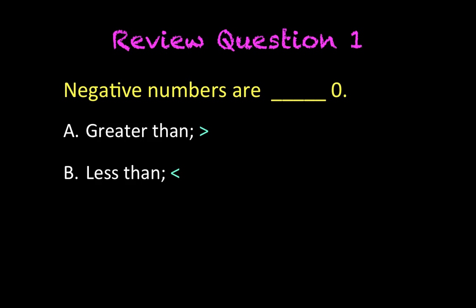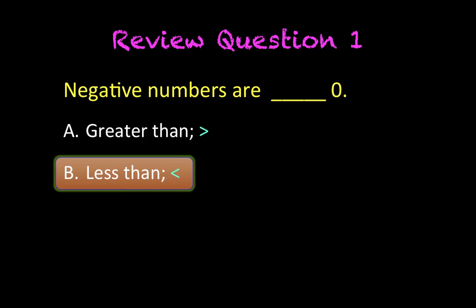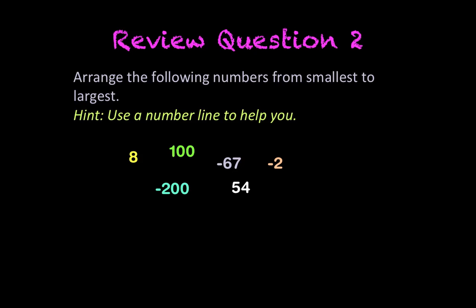All right, so review question one: negative numbers are blank zero. So you have to choose between option A or B and fill in that blank space. You know that symbol, when that comes up, that means you need to pause the video, take out your pen and paper again, and write down an answer. Is it A, greater than zero, or B, less than zero? That's right, guys, negative numbers are numbers that are less than zero.